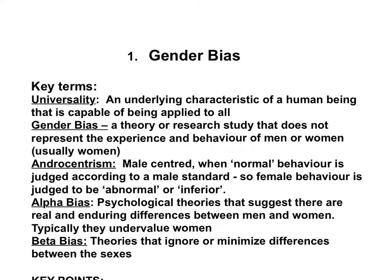Let's go through the five key terms, which I suggest you just learn as they are on the sheet, because these may be two-mark or even multiple-choice questions. Universality means any underlying factor or behaviour of a human being that we can apply to all human beings, no matter where they live, what sex they are, or what they do — it's universal behaviour. Gender bias means any theory or study in psychology which does not represent the experience and behaviour of men or women, and normally within psychology it's been women who are not represented. A very good example would be Solomon Asch's conformity studies with the lines.